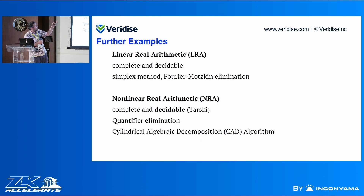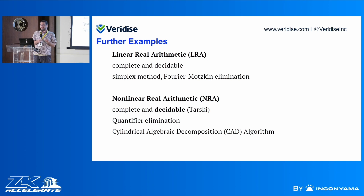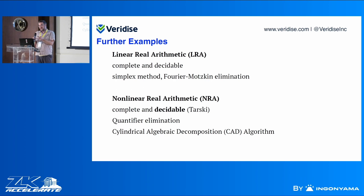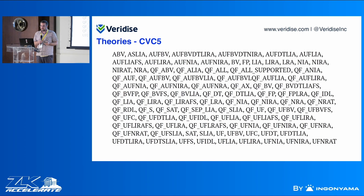For more visual examples: linear real arithmetic is complete and decidable — it translates into the simplex method and Fourier-Motzkin elimination. What's very surprising is that nonlinear real arithmetic — the real numbers together with addition and multiplication — unlike the integer case, is also complete and decidable. That's a result by Tarski, and you even have quantifier elimination: given a statement with quantifiers, you can obtain a corresponding statement without quantifiers that is satisfiable if and only if the original is. CVC5 supports a very long list of possible theories — it's a very rich world with lots of space to experiment.